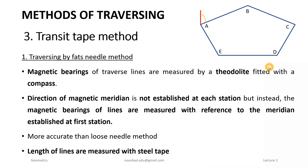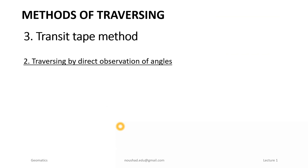The length of lines AB, BC is measured using a steel tape. The difference between the loose needle method and the fast needle method is: in the loose needle method, the magnetic meridian is established at all points; in the fast needle method, the magnetic meridian is established only at the first point. The magnetic bearing of other lines are calculated with reference to the meridian established at the first station.